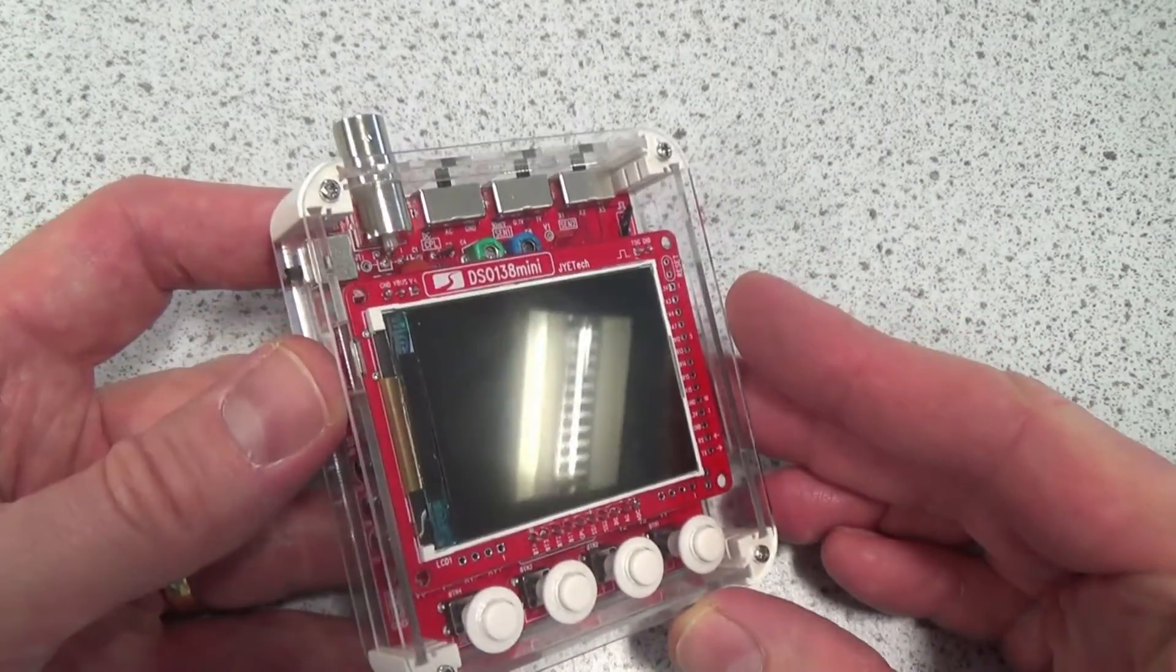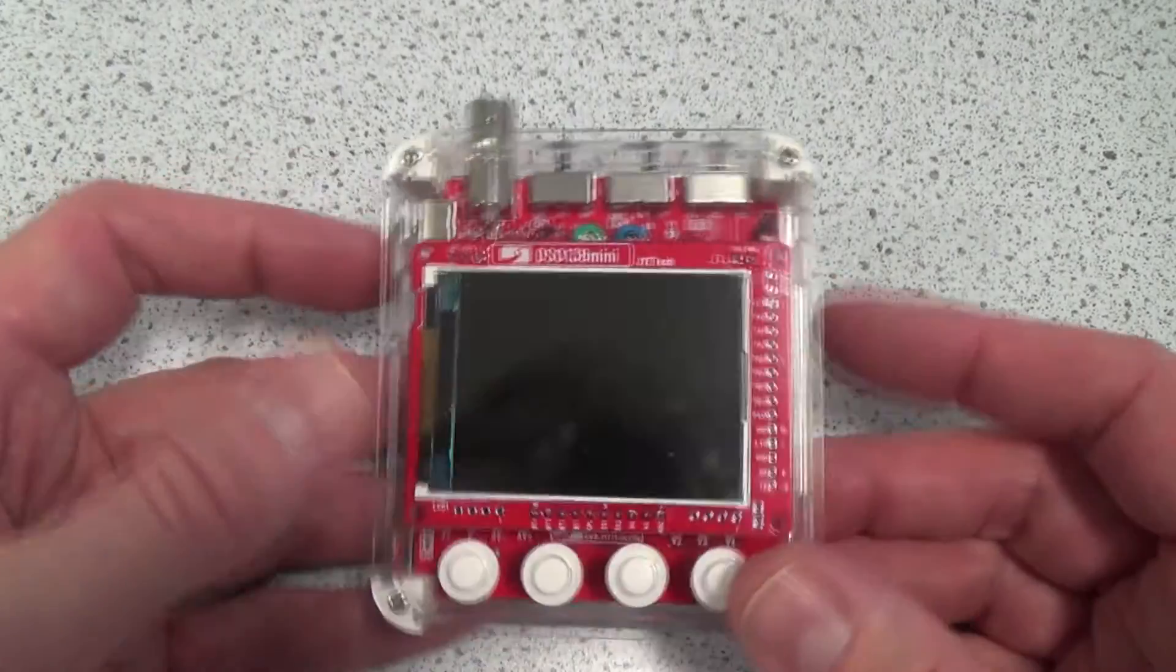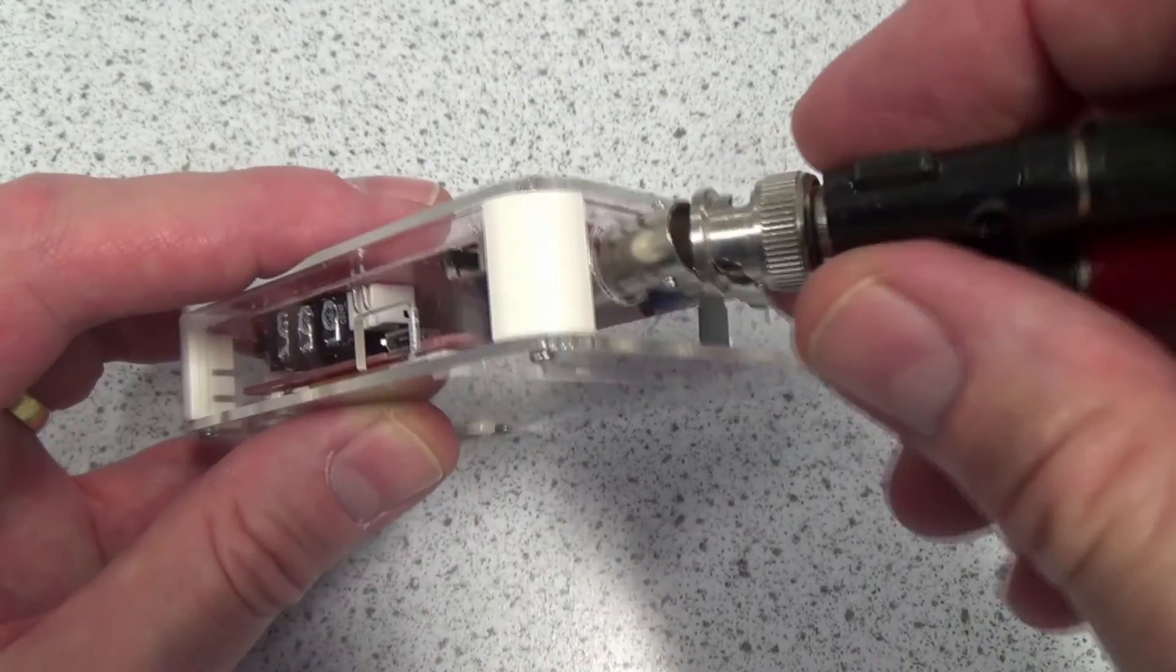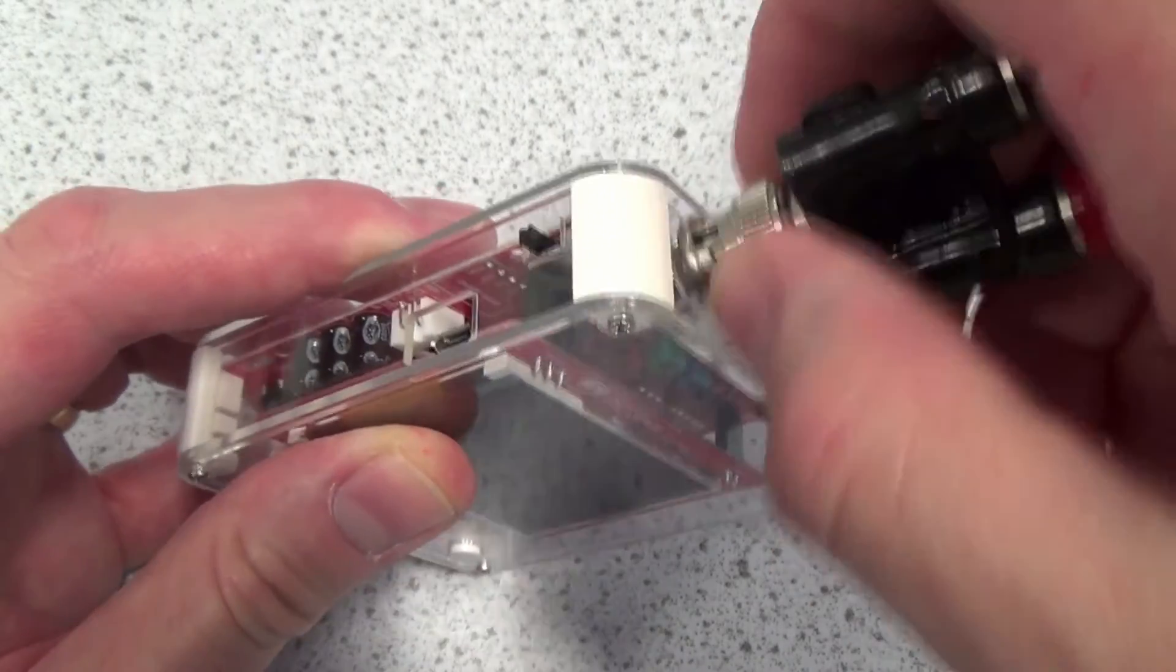Anyway, we got there in the end, but then I decided to de-solder the hook probes and then fit a BNC connector instead, which meant I could fit either test leads or as I have here, a BNC to banana socket adapter.